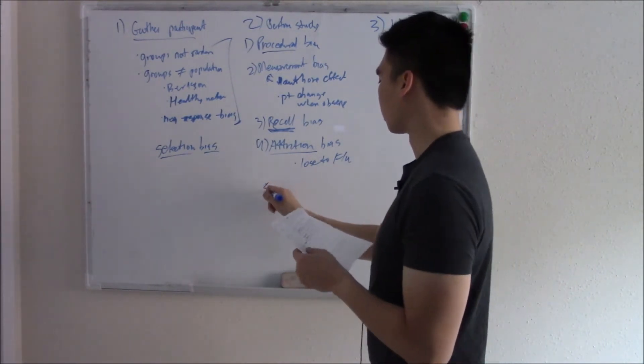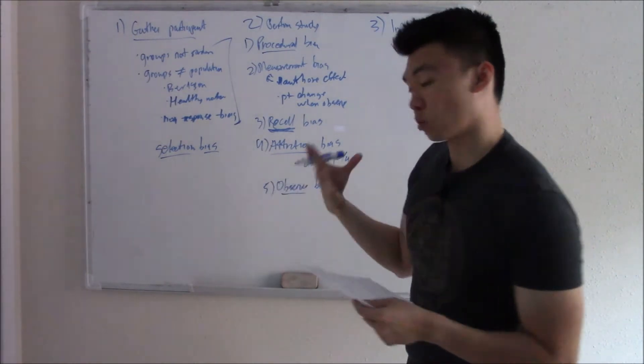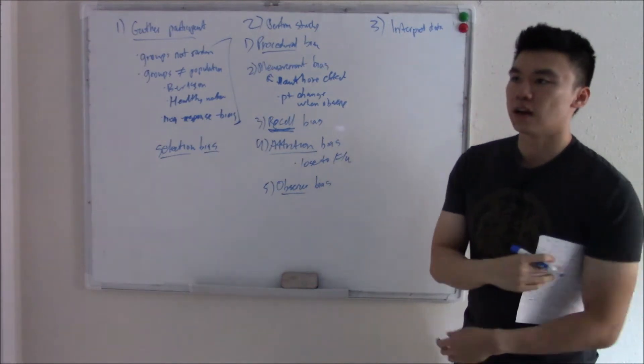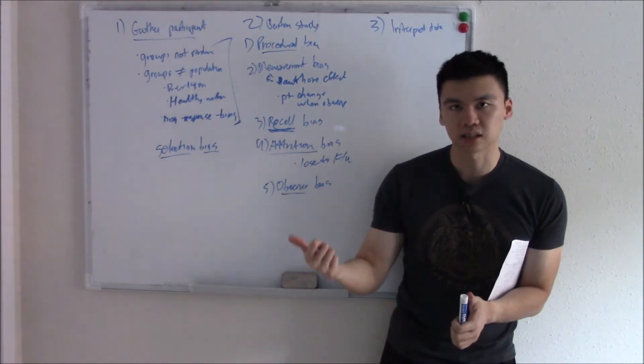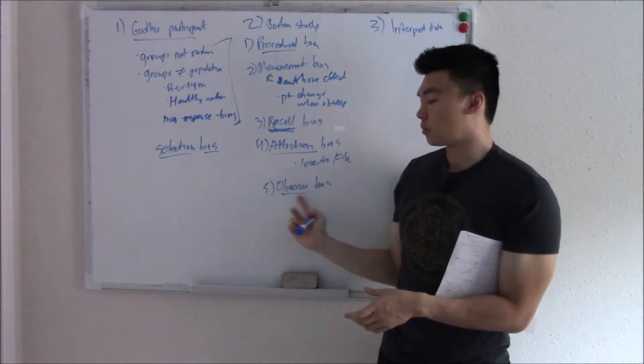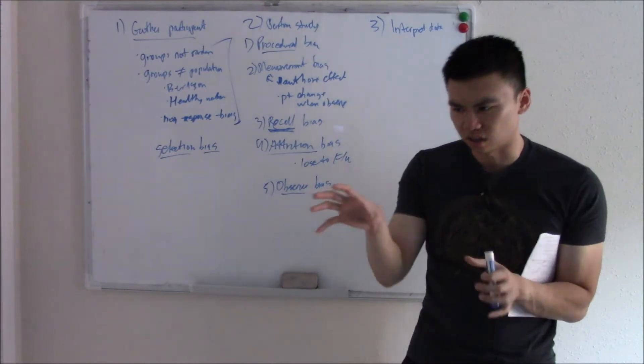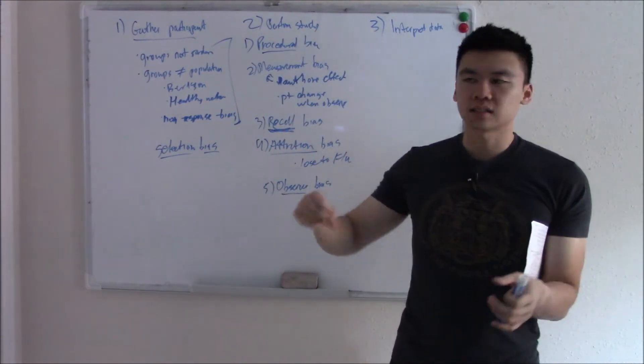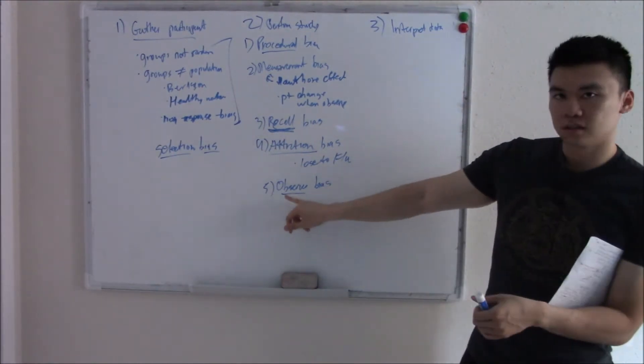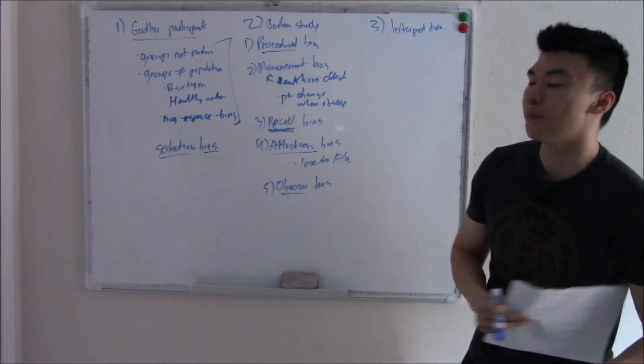You have something called observer bias, where the observer, the researcher is biased. So if you have a study that wants to see what percentage of radiologists can pick up lung cancer on a chest X-ray, if the observer, if the researcher knows that a patient has lung cancer, they're going to look extra hard on that chest X-ray. If they know that patient doesn't have lung cancer, they won't even look at it. If the observer is biased in any way that can affect your study, that is observer bias.